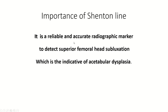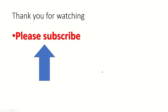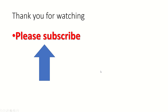The importance of Shenton's line: it is a reliable and accurate radiographic marker to detect superior femoral head subluxation, which is an indication of acetabular dysplasia. Thank you for watching — please subscribe to my channel.